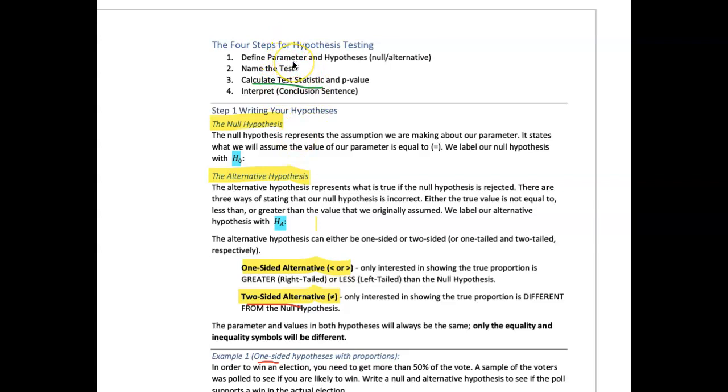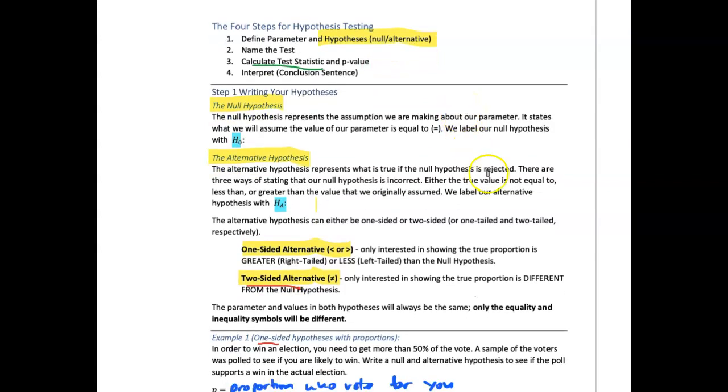What's the parameter we're testing? Our hypothesis is an additional piece here. What is the name of the test? We do calculations of the test statistics and p-value in this case, but it's a calculation. And then we have an interpretation.